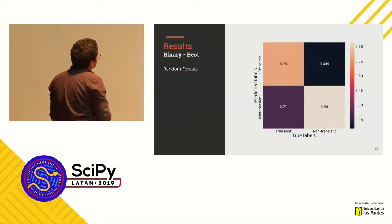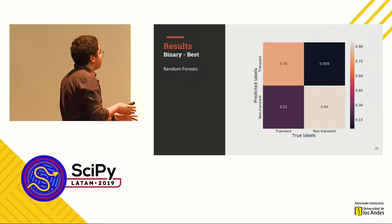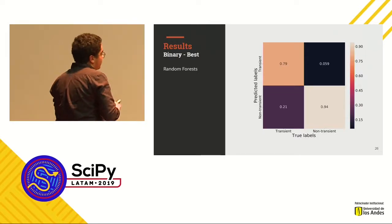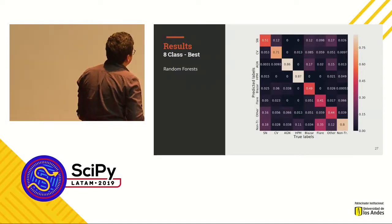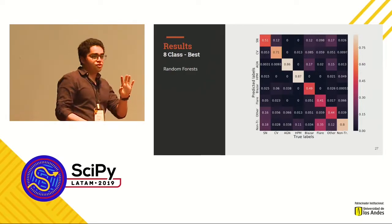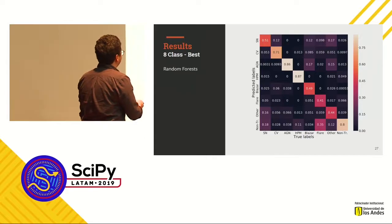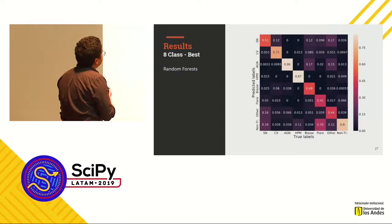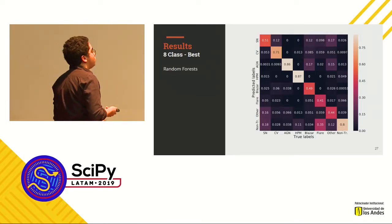If we visualize the confusion matrix for the transient classification, the model manages to distinguish all of the non-transients, but it has some problems distinguishing some transients from non-transient objects. With respect to the multiclass classification, this is actually really interesting — remember I said that blazars are a kind of active galactic nuclei where the jet is pointing towards the Earth? That is clearly seen here: for blazars, the model is confusing most of them for active galactic nuclei. So it is actually learning something physically meaningful, which led us to think that perhaps we might fuse those two categories — after all, they're kind of the same thing.